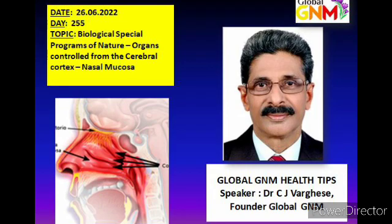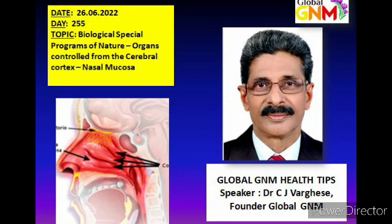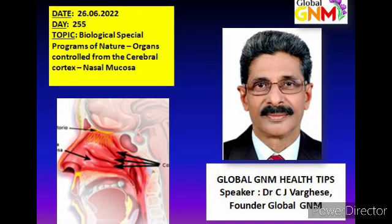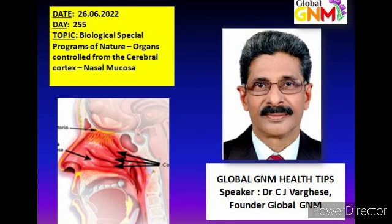Now comes the most important part in the study of the SBS of the nasal mucosa — that is its biological conflict. As you know already, the biological conflict of any organ is linked to its function. The biological conflict related to the nasal mucosa is a scent conflict. It would be useful to remember that the biological conflict linked to the paranasal sinuses is also the same as that of the nasal mucosa, which we will study later. Also remember that the biological conflict of the sub-mucosa of the mouth and pharynx, which we studied earlier, is a morsel conflict.